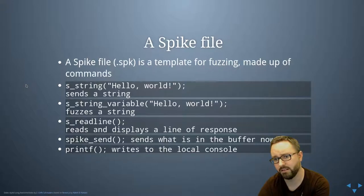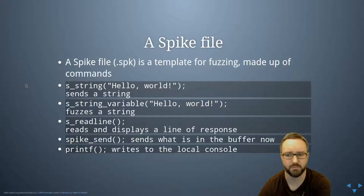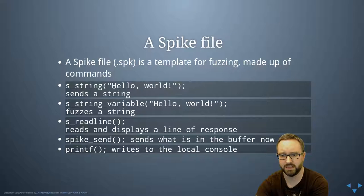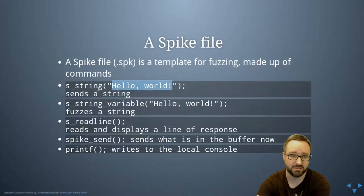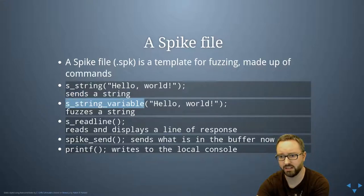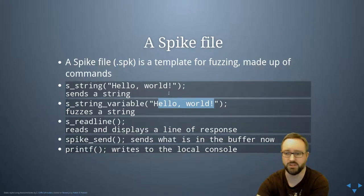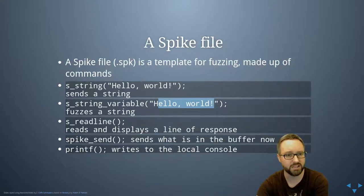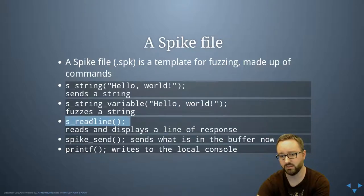A Spike file has the extension .spk and is a template for fuzzing made up of commands. You can use s_string with a string to just send that string. You can use s_string_variable which takes a string as the default value but then mutates it — fuzzing by putting variations and random values in instead. You can also use s_readline, which waits for a response from the other end.